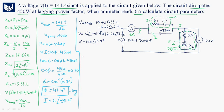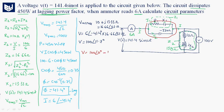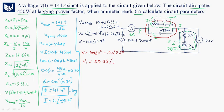Now we find the voltage across the parallel branch. The total RMS voltage is 100∠0°. Subtracting the voltage across Z2, V1 = 100∠0° − 100∠11.7°. Solving this, the voltage across the parallel combination is V1 = 20.38∠−84.08 degrees.